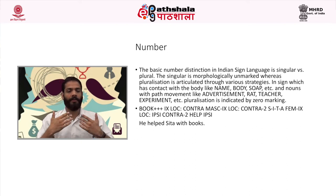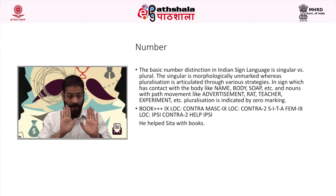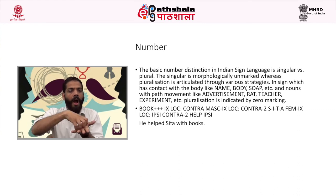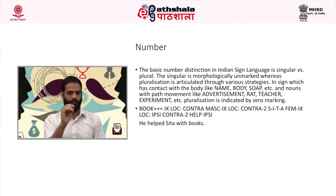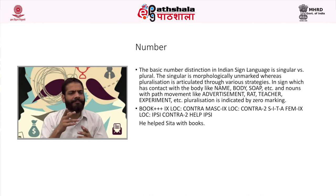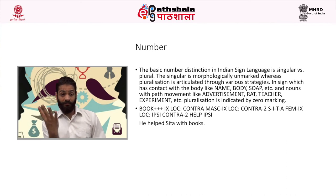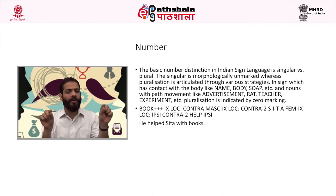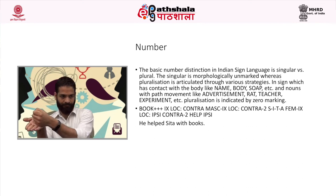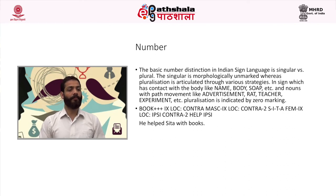In signs that have contact with the body (like name, body, soap) and nouns with path movement (like advertisement, rat, teacher, experiment), pluralization is indicated by zero marking. The most common strategy for pluralization is noun reduplication, where the noun sign is reduplicated thrice with a slight change of location. For example, 'he helped Sita with books' — here books will be repeated thrice, signed as: he, Sita, help. That would be the sign order.